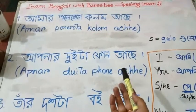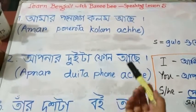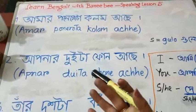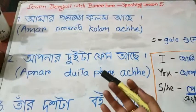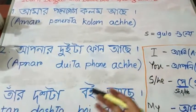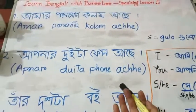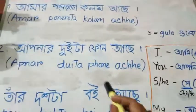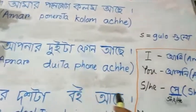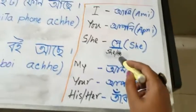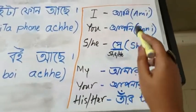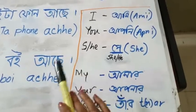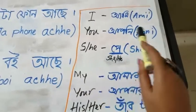Today's lesson is about numbers and about possessions — when you want to talk about possession, like 'I have something,' 'you have something,' 'he has something.' We will learn that, but before that you will need these words. You already know these words if you have watched the first four speaking lessons.